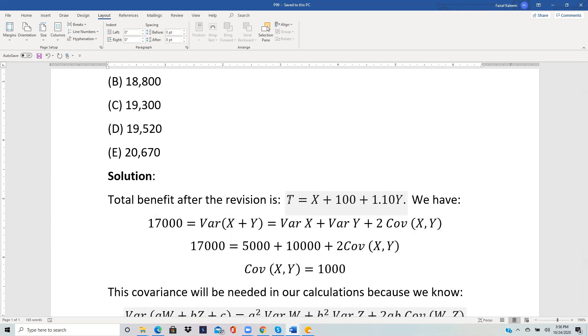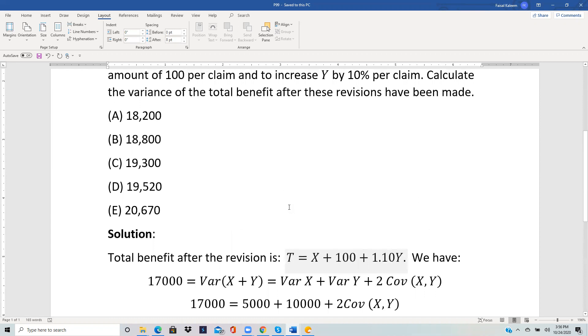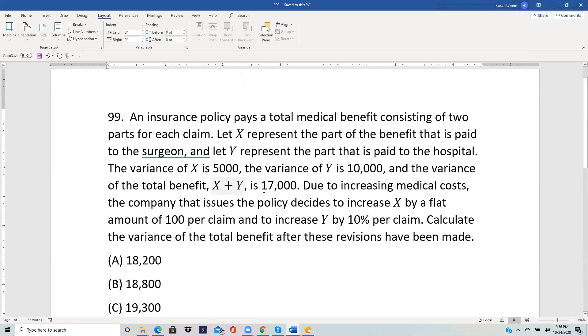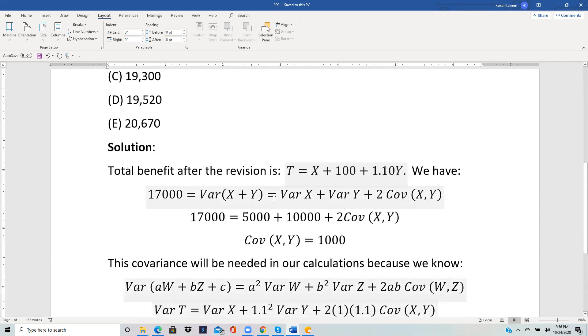So to calculate covariance of X and Y, we use the fact that the variance of X plus Y is 17,000. They give us the variance of X plus Y is 17,000. And that, according to the formula we just mentioned, is variance of X plus variance of Y plus 2 times covariance XY.